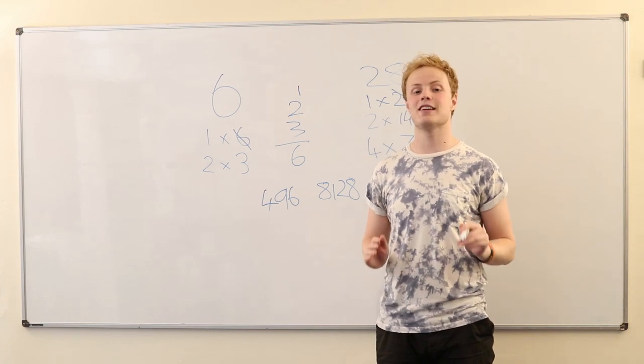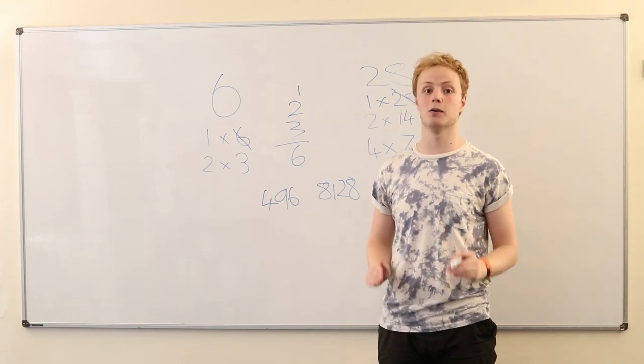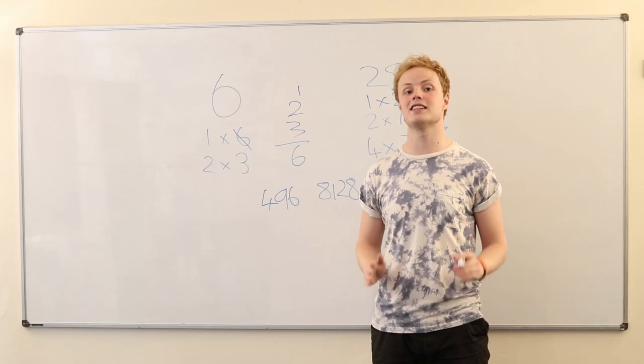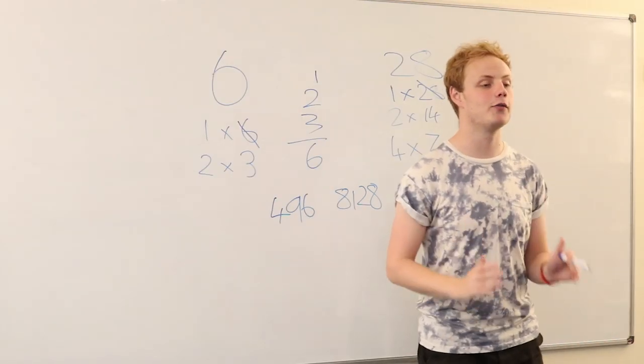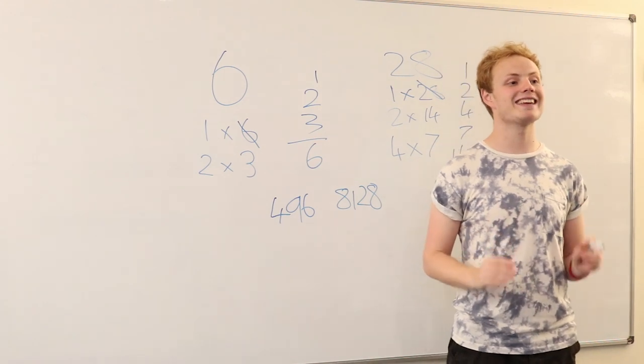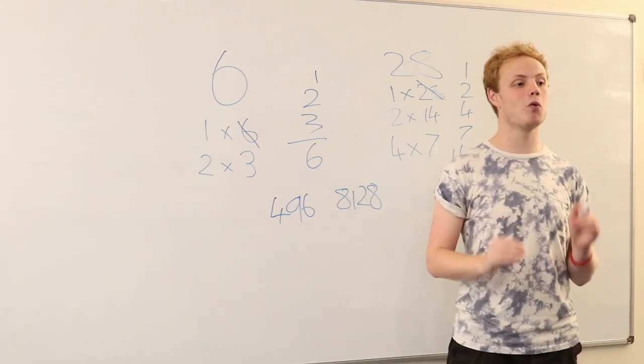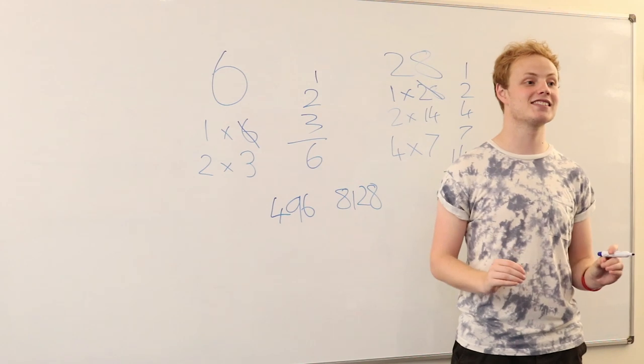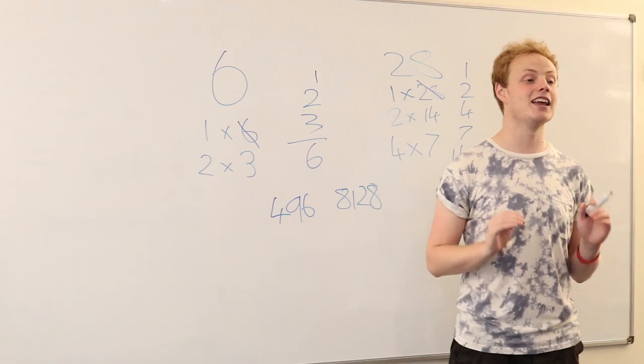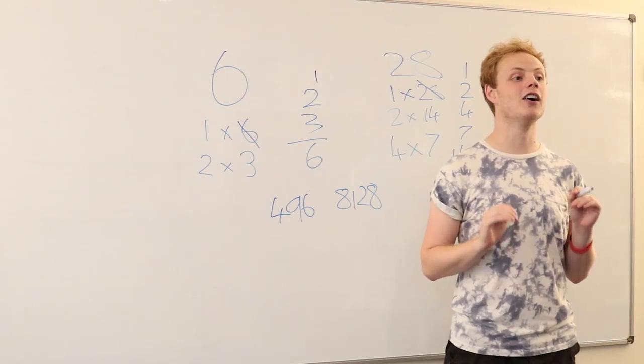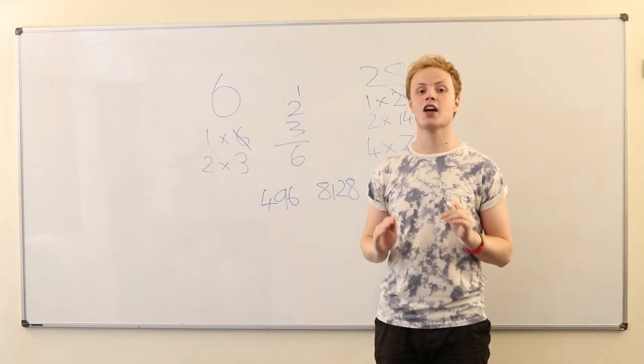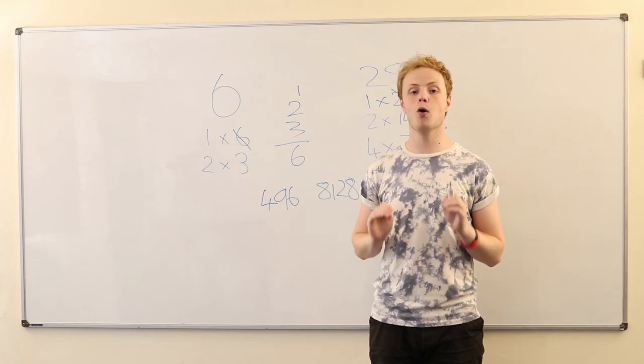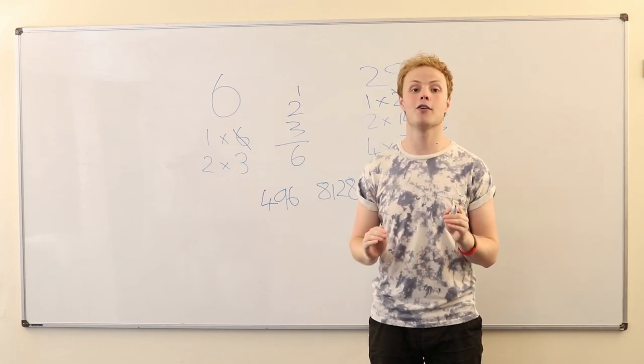And in fact, we've only to date found 50 of these perfect numbers. We don't know if we're ever going to find any more. And we still don't know yet whether there actually is an odd perfect number. However, we have checked every single odd number with up to 1,500 digits. So it's looking very unlikely. And if you want to find one, you're going to have to start looking from there.